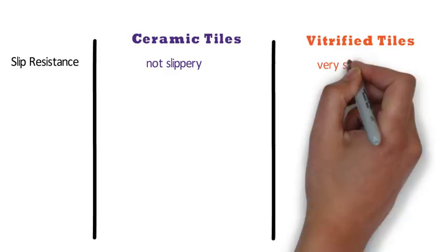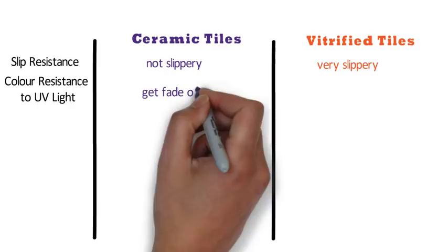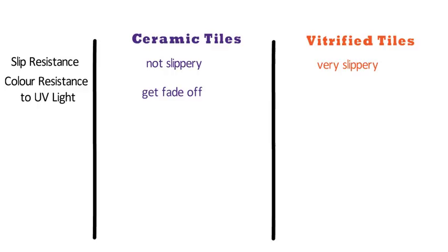Number twelve is color resistance to UV light. In the case of ceramic tiles, direct exposure to sunlight will cause the color of the tiles to fade over a period of time. In the case of vitrified tiles, there is no effect of sunlight as the color will remain the same over a period of time.